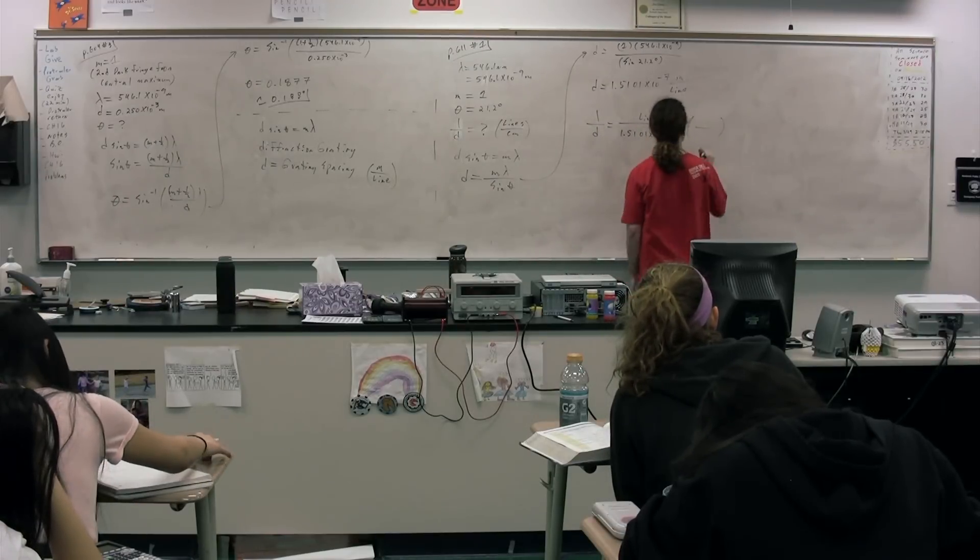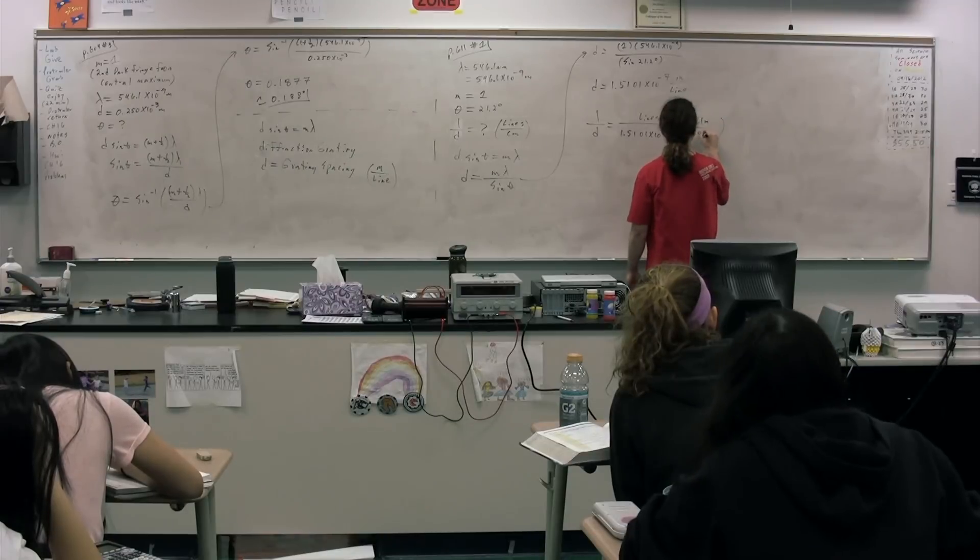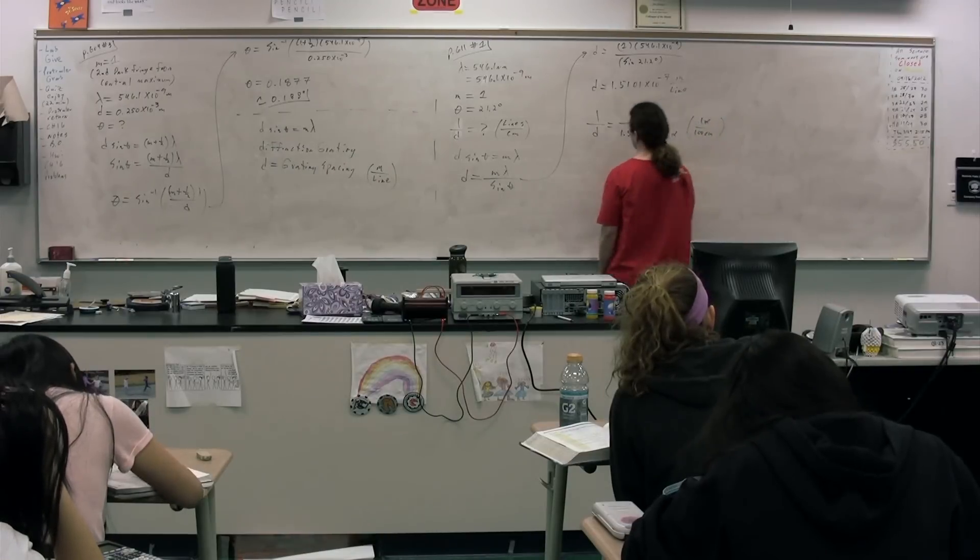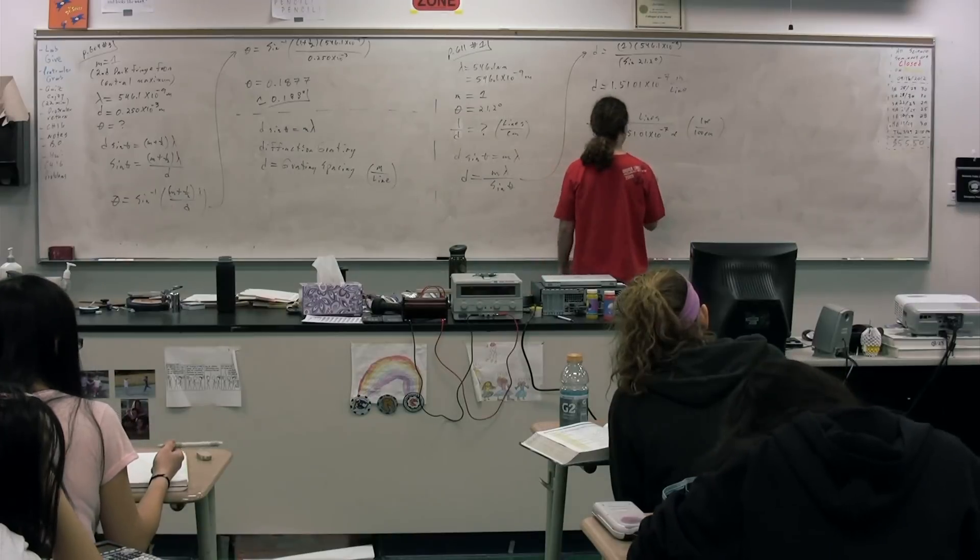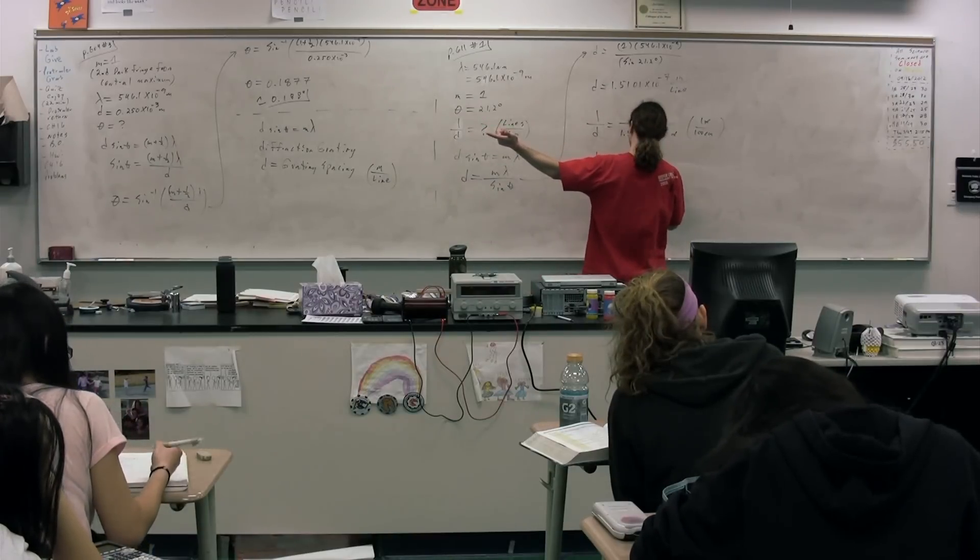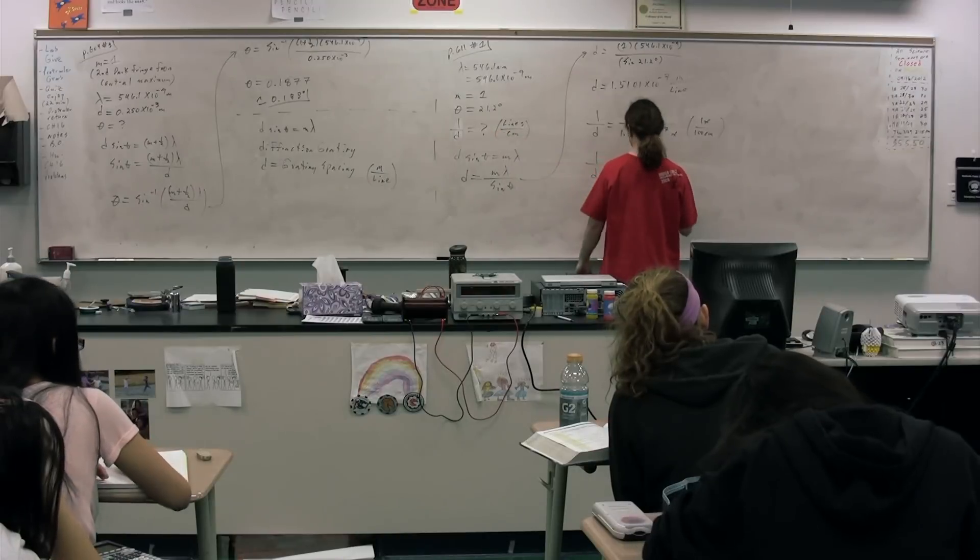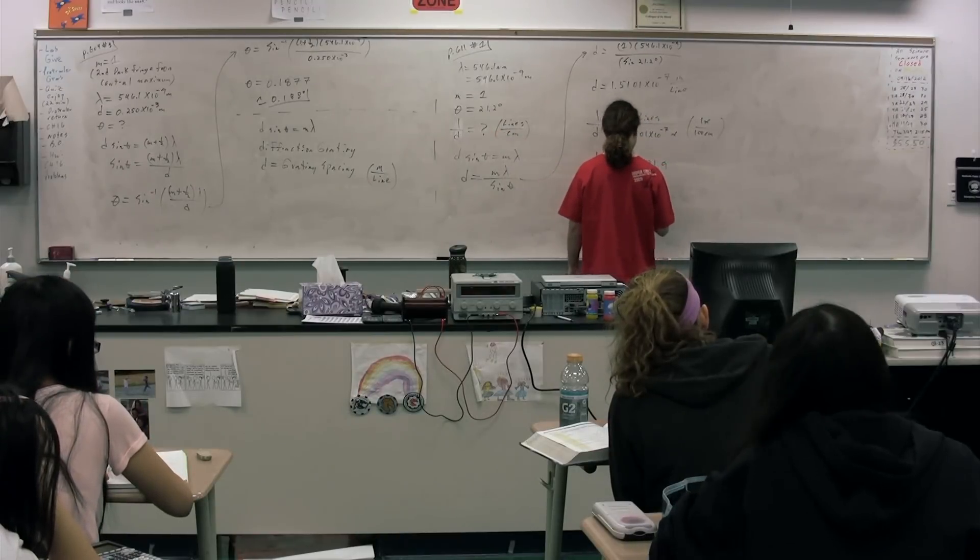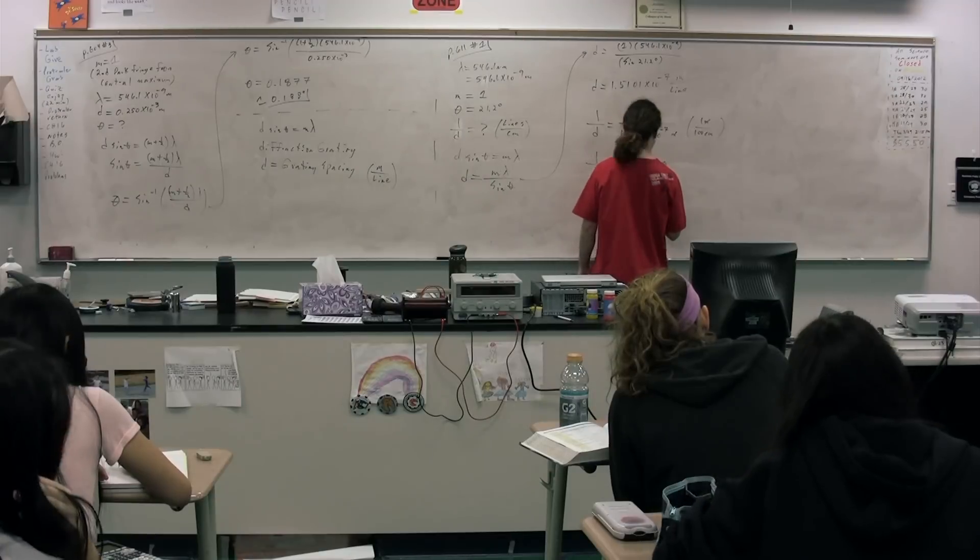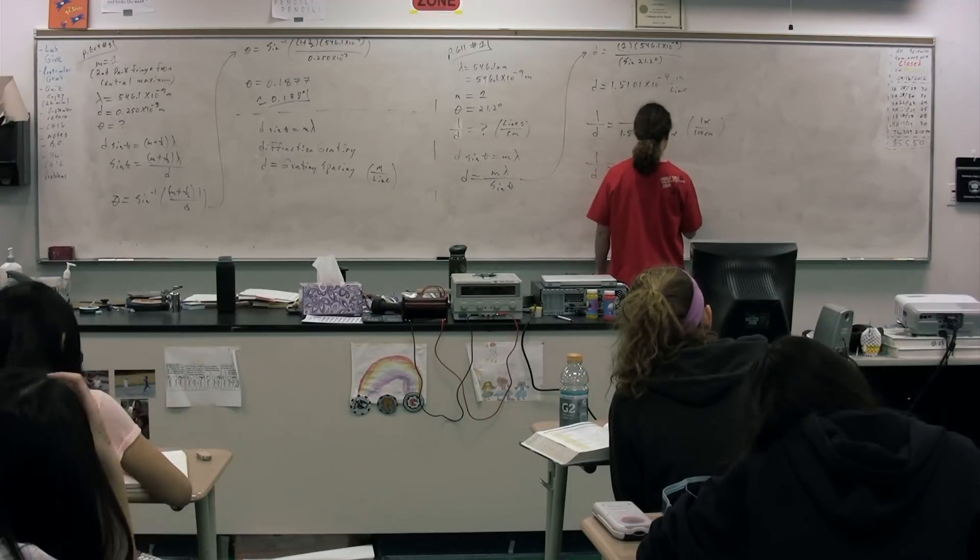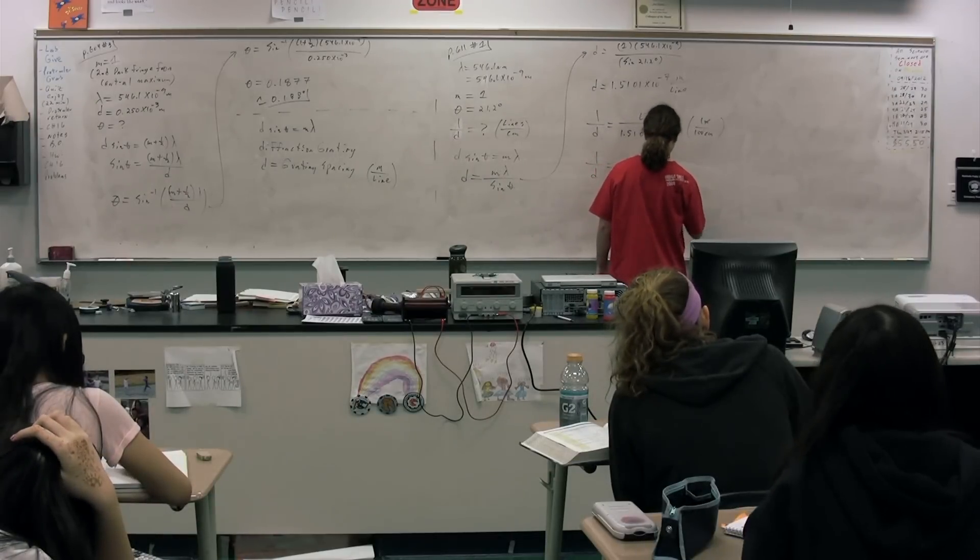We need to convert over to centimeters. So 1 meter on the top, 100 centimeters on the bottom. Meters cancel out. 1 over D. 6,620. Okay, so with sig figs, 6,620 lines per centimeter.